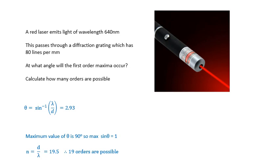So if you put sine theta equals 1 in the equation and then get the value of N. And if you get a value of, let's say, 19.5, then 19 orders are possible in this particular example.